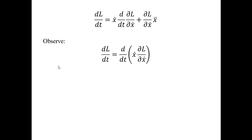The last key step is making an observation about the right-hand side: it looks like something that came from a product rule. It turns out that if you take the time derivative of ẋ times ∂L/∂ẋ, you can recover precisely this right-hand side. By expanding that derivative using the product rule, you can verify it is indeed equal to the right-hand side.